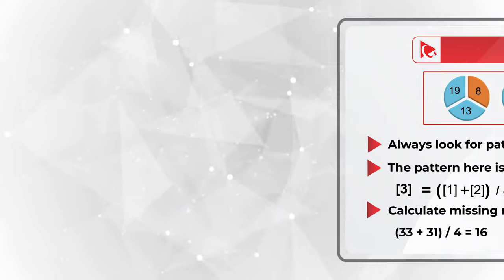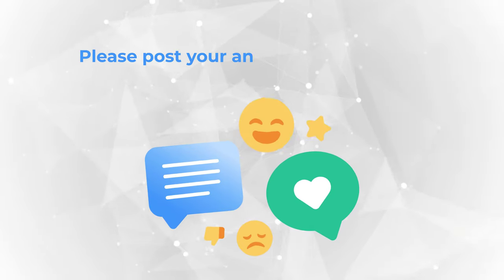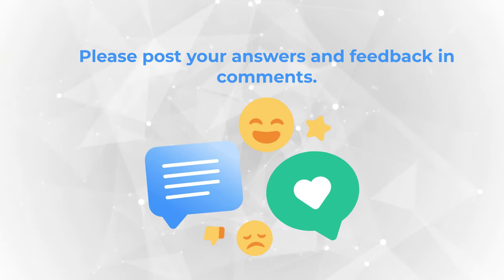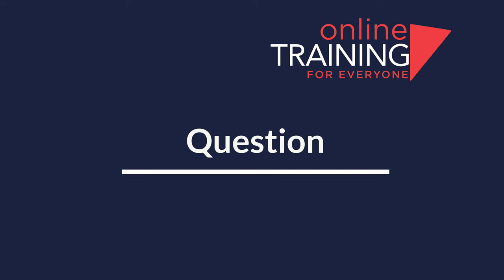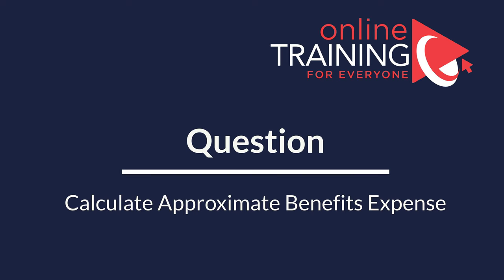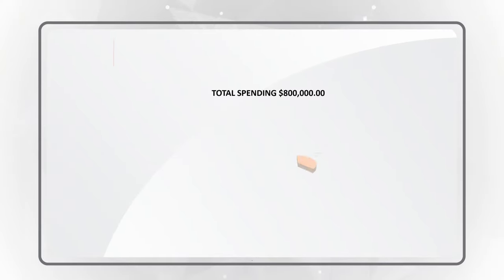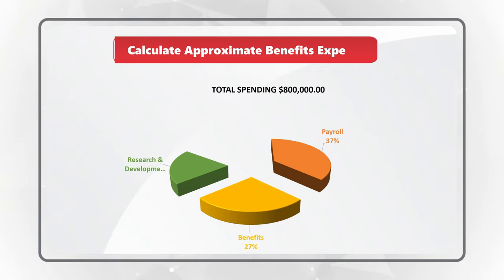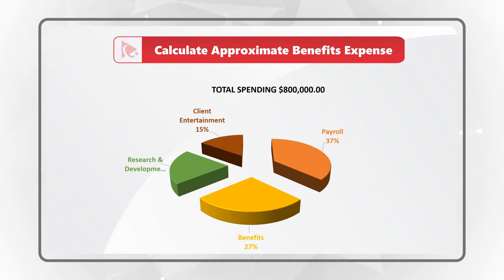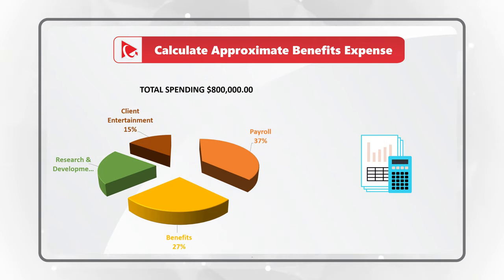Hopefully you've enjoyed this tricky question and now know how to answer similar problems on the test. Now here's a question for you to try. You are presented with total company spending equal to $800,000, and you need to calculate the approximate benefits expense.